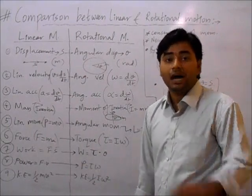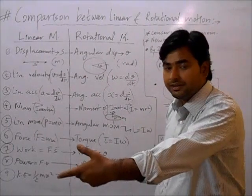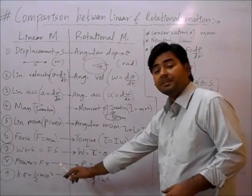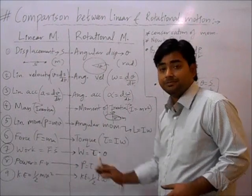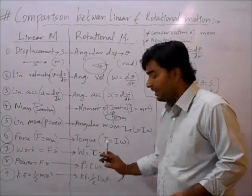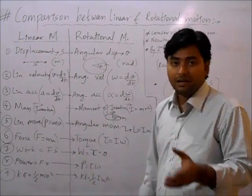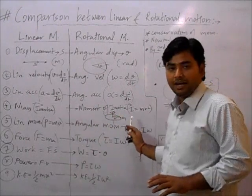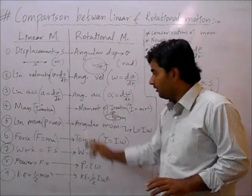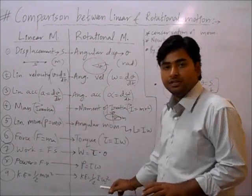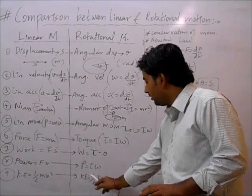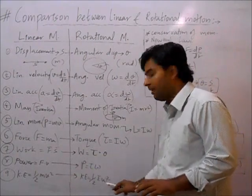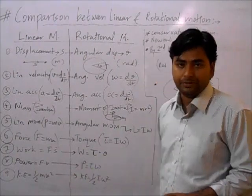Kinetic energy in linear motion is ½mv². In rotational motion, mass is replaced by moment of inertia I and velocity by angular velocity omega. So rotational kinetic energy = ½Iω².